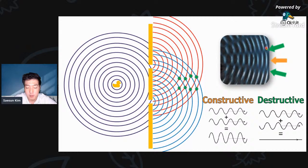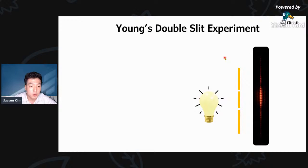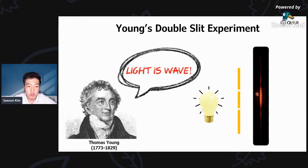For your headphones on an airplane, this is how you can cancel the noise of the environment. In 1801, Thomas Young discovered that light is also a wave — like water waves and sound waves — that can generate an interference pattern. You can see the bright region and dark region here, corresponding to the constructive and destructive interference pattern. For about 100 years there was no problem treating light as a wave, until the 19th century.